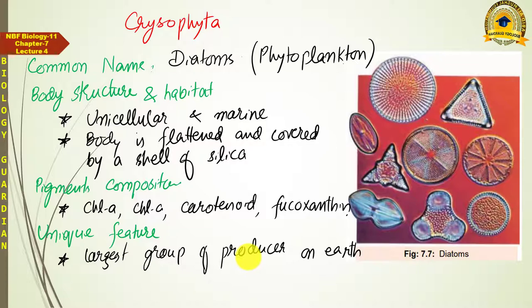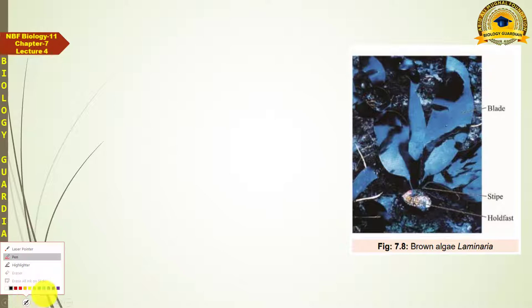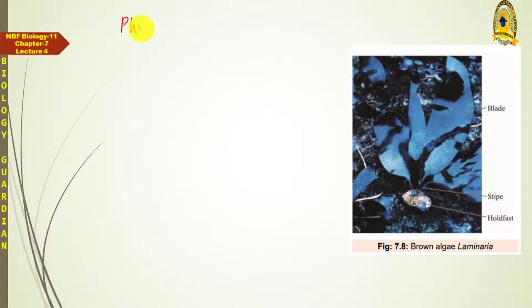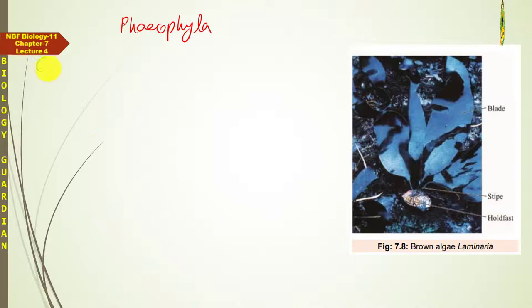After Chrysophyta, we discuss Brown algae, whose scientific name is Phaeophyta. Their common name is Brown algae.